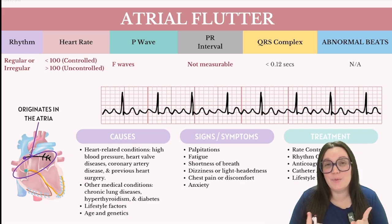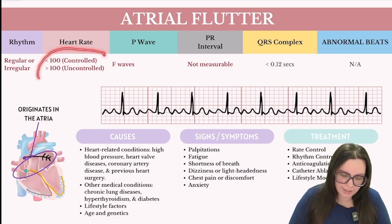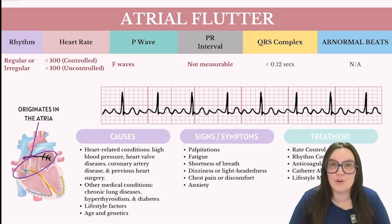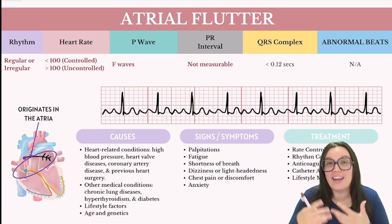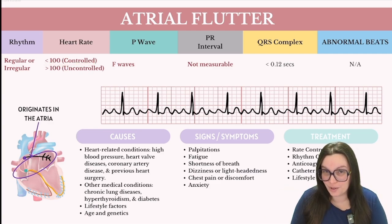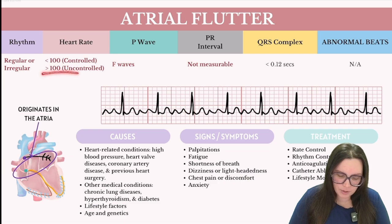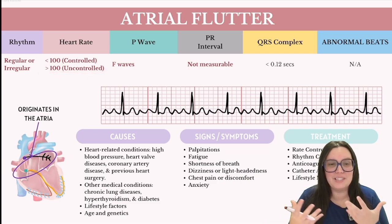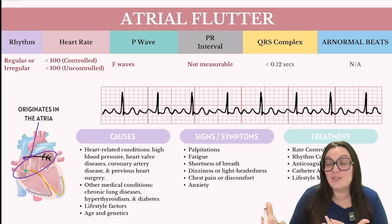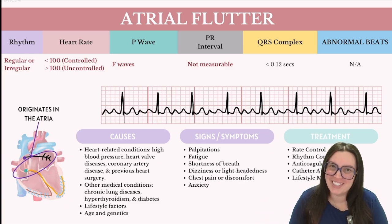As we discussed with atrial fibrillation, we're also going to see that same variation in heart rate with atrial flutter. Anytime we have a heart rate less than 100, we call that controlled. Anytime we see heart rates greater than 100, we call that uncontrolled. The signs, symptoms, causes, and treatment are going to mimic what we see with atrial fibrillation.